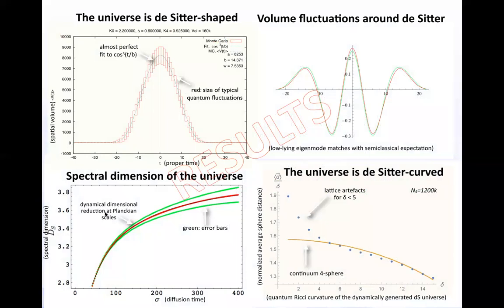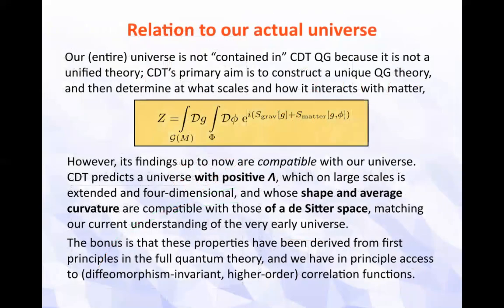Here are the volume fluctuations I have already talked about — one of the low-lying modes. And these are the recent results where we match the average curvature of this dynamically generated spacetime with that of a classical de Sitter, and find a nice coincidence. How do these results relate to our actual universe? The question the organizers asked was to explain how everything is contained in our approach, but CDT is not a unified theory. Its primary aim is to construct a quantum gravitational theory — assuming this is non-trivial — and then determine at what scales and how it interacts with matter, which is in principle easily done by adding matter path integrals under the sum over geometries.